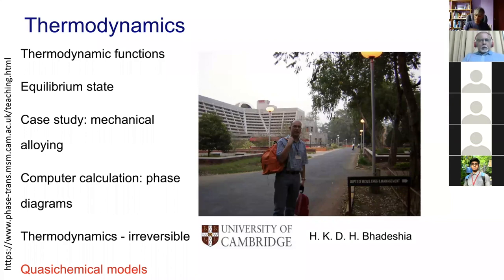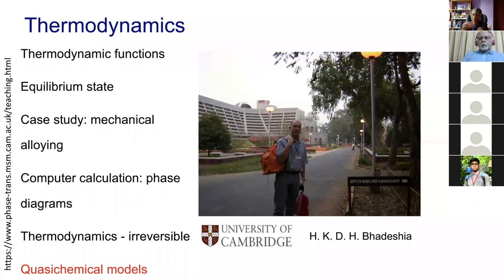Today's talk is about getting away from the approximation that even when the enthalpy of mixing is finite, we assume that atoms are randomly distributed to calculate the configurational entropy. In general, that cannot be the case because if the enthalpy of mixing is finite, it means some atoms prefer to be next to particular kinds of atoms, and therefore the configurational entropy cannot be random.